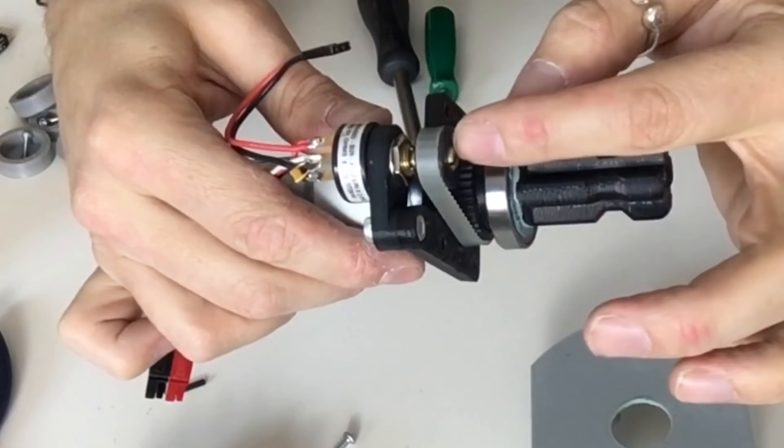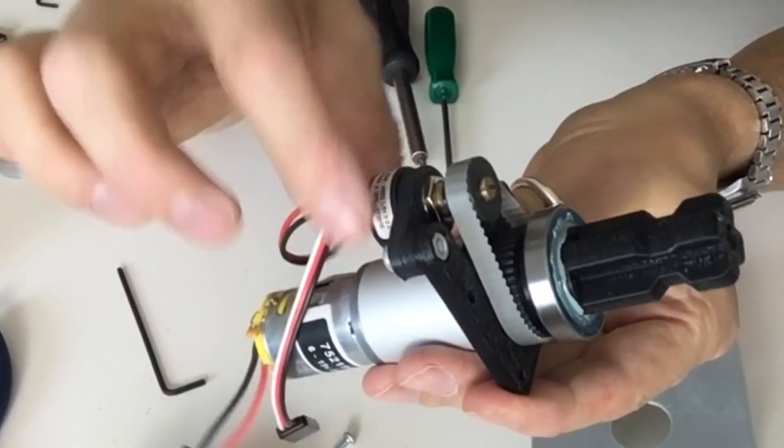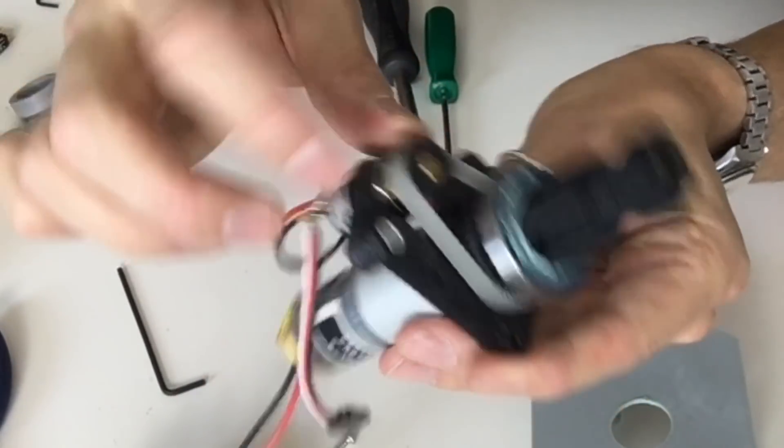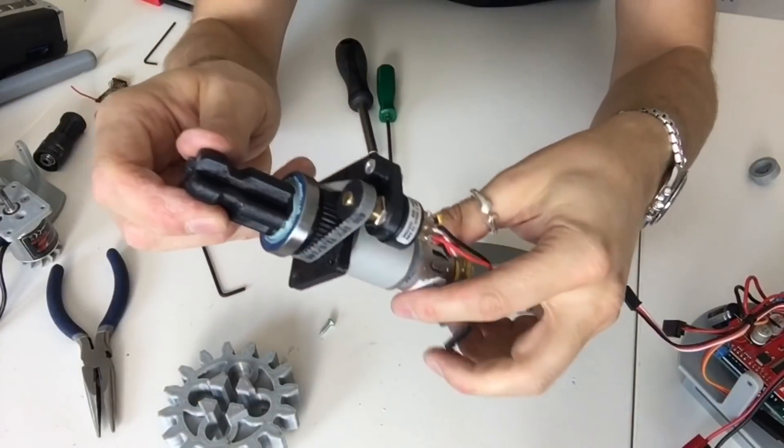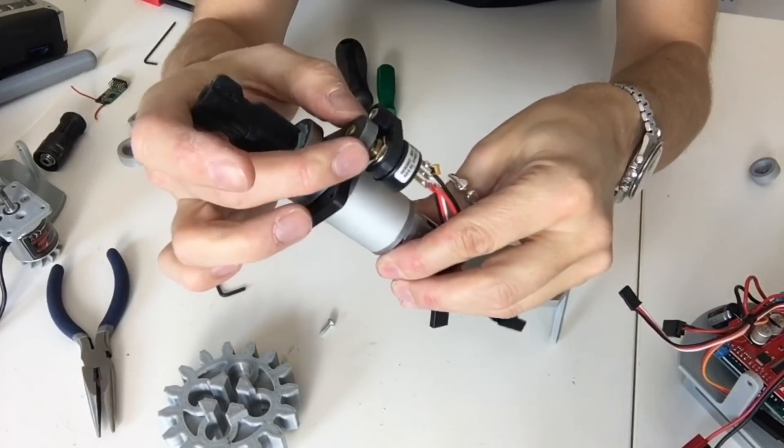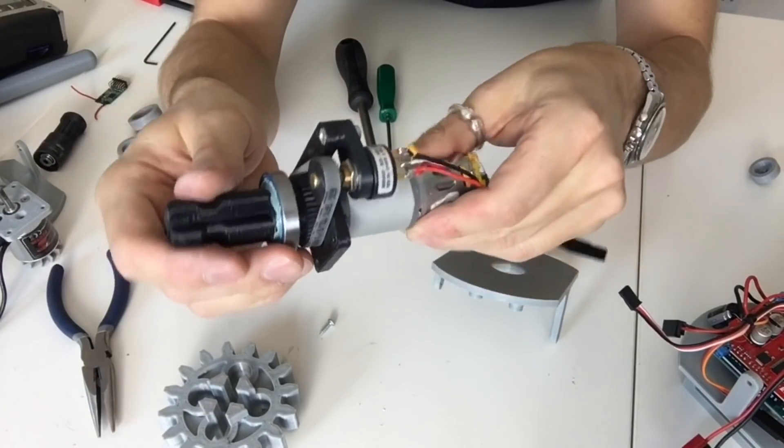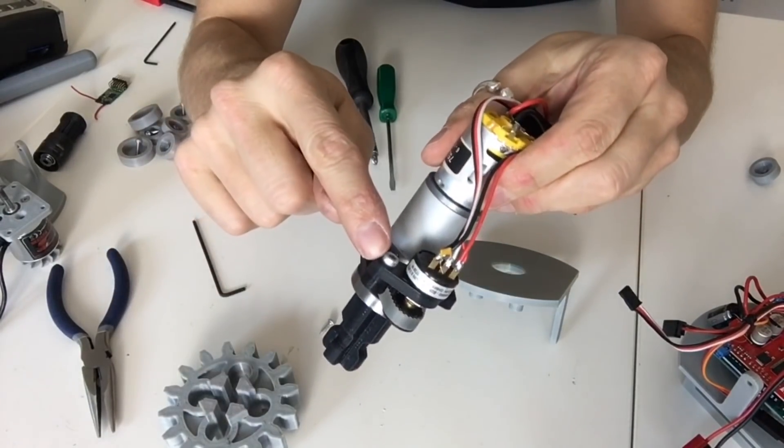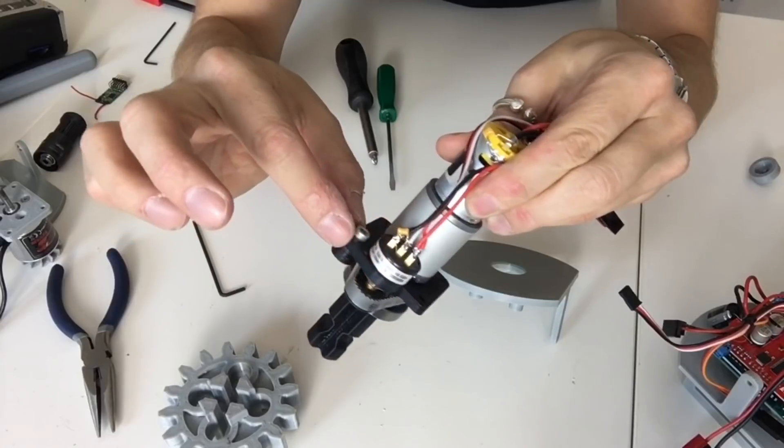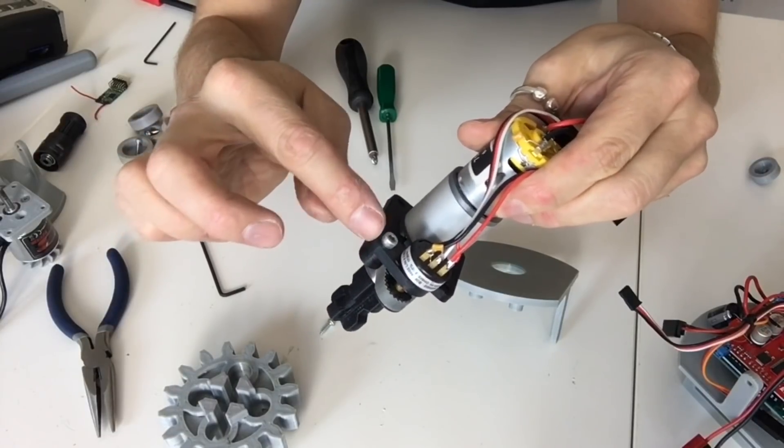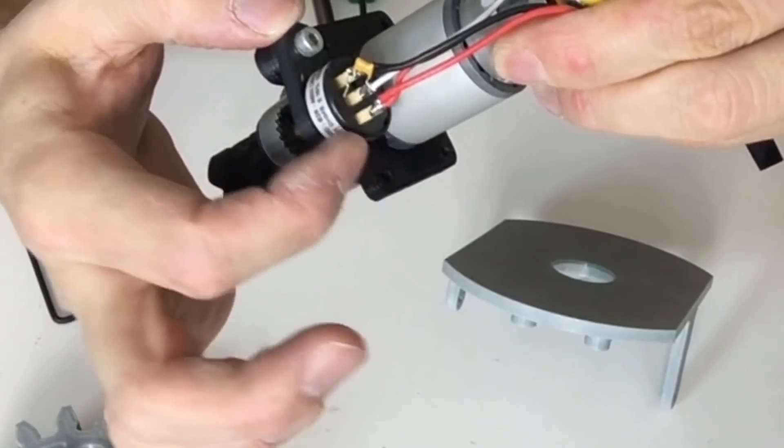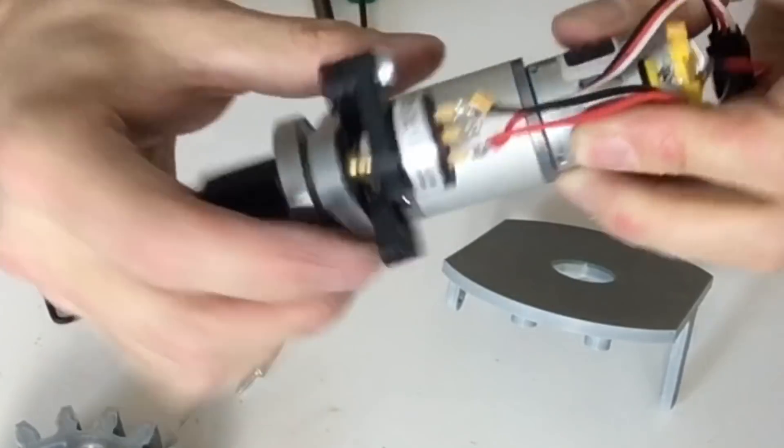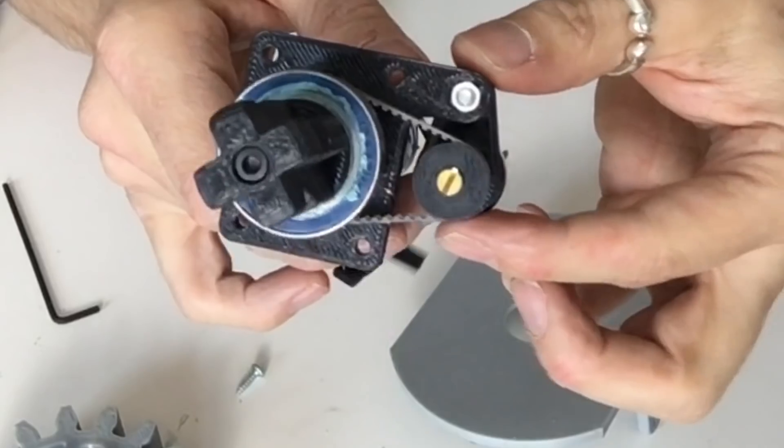A simple way of tensioning the belt up, because we don't really need to transfer much torque through this at all, all I've done is the pulley mount is mounted off of a single bolt here. You can undo that bolt and you can move this pulley up and down and that gives you a way of simply tensioning that belt up.